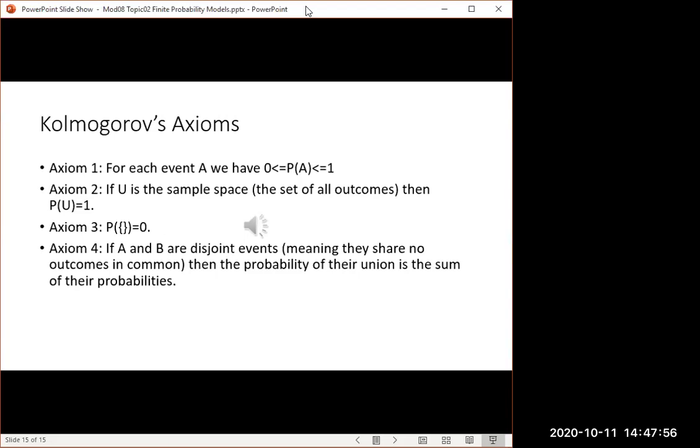Axiom three, the probability of the empty event is zero. In other words, you can't have a five percent probability that the outcome from the experiment is like none of the above. The outcome always has to be one of the items listed in your sample space.